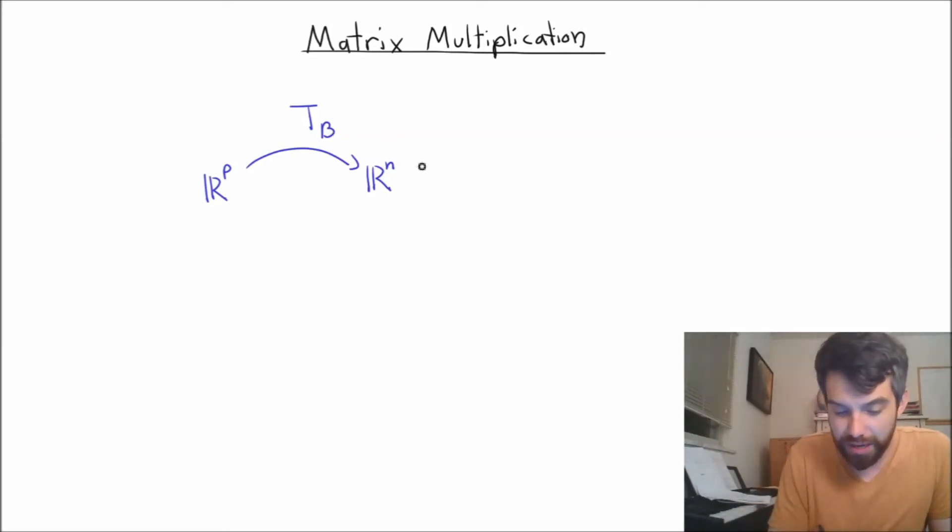Then I'm going to imagine that I have a different transformation. This is the transformation T sub a, because its matrix is going to be the matrix A. It takes an n vector, which is in the domain for T_A, and spits out an m vector.